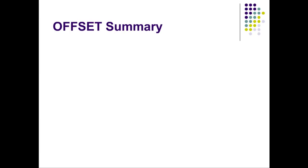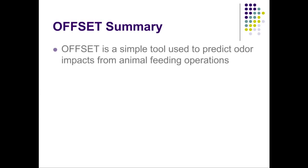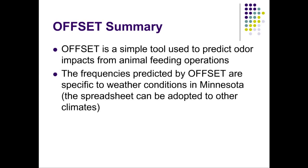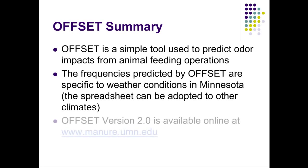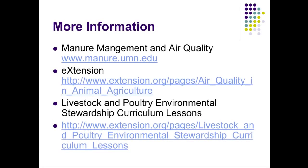Despite its simplicity, Offset has been used successfully for predicting the odor impact from animal feeding operations. More information on Offset, odor, and air quality is available at the Manure Management and Air Quality website at the University of Minnesota, where you'll find the original fact sheet on Offset and a version of the spreadsheet you can download for free. Thank you for your interest in air quality — more information on this increasingly important topic is available at the websites listed here.